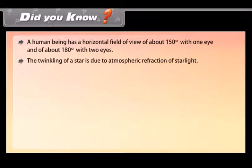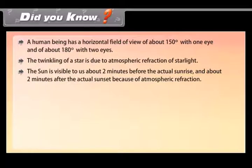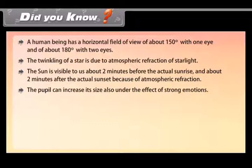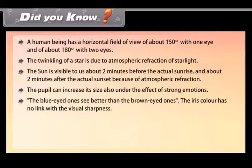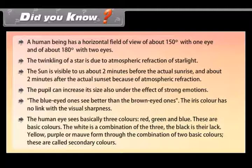Did you know: The twinkling of a star is due to atmospheric refraction of starlight. The sun is visible about two minutes before actual sunrise and about two minutes after actual sunset because of atmospheric refraction. The pupil can also increase in size under the effect of strong emotions. The iris color has no link with visual sharpness. The human eye sees basically three colors — red, green, and blue — these are primary colors; white is their combination and black is their absence. Yellow, purple, and mauve are secondary colors formed by combining two primary colors.